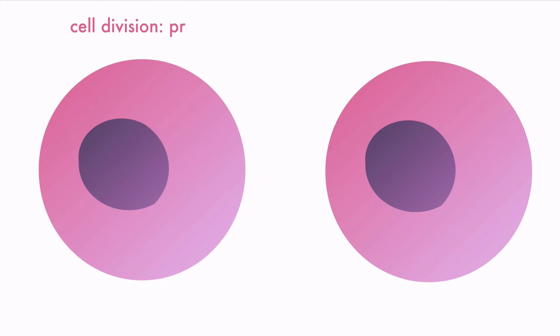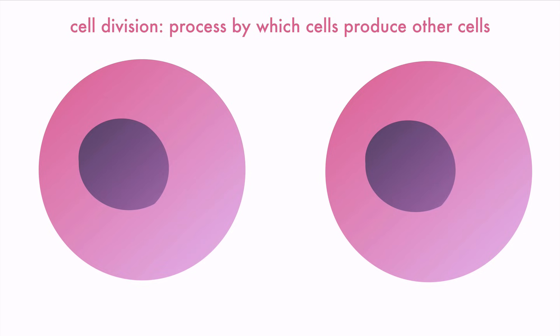When a cell gets too big, its surface area to volume ratio is no longer able to meet its needs. The cell has two options: it could die, or it can divide. Cell division is the process by which cells produce other cells. It's a little different for prokaryotes and eukaryotes, but the general idea is the same — they need to make copies of the materials and then divide into two cells. Cells need to do this to repair damaged tissue, to grow, and to make more cells.